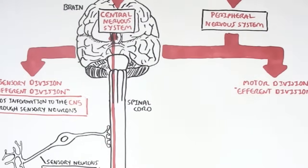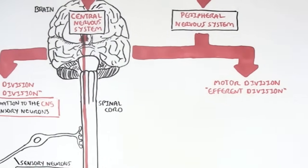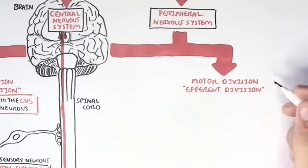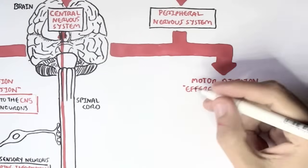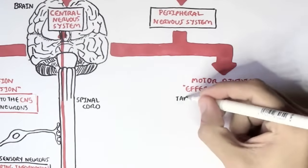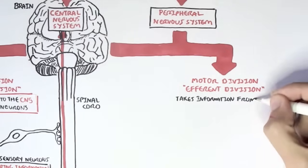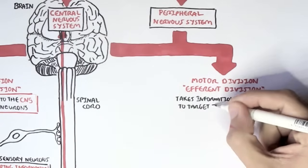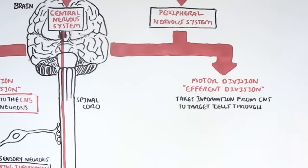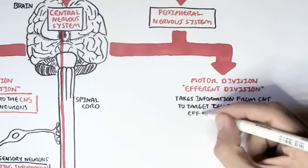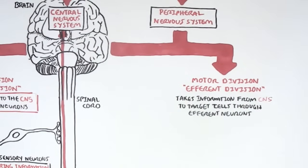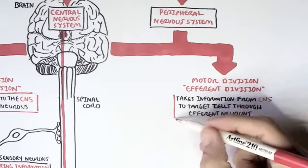The actual response is part of the motor division, or the efferent division of the peripheral nervous system. This is where it takes the signal from the central nervous system — from the brain or spinal cord — and sends it to a target cell through efferent neurons.